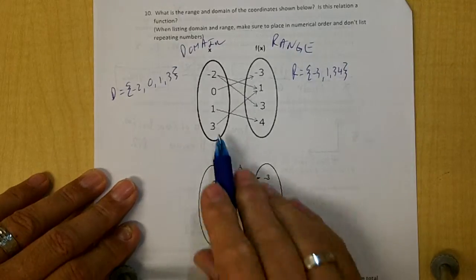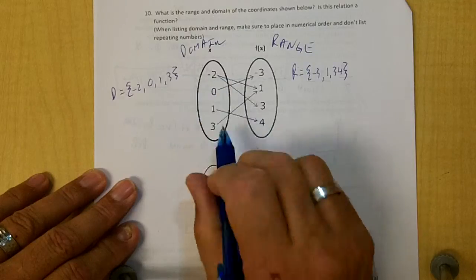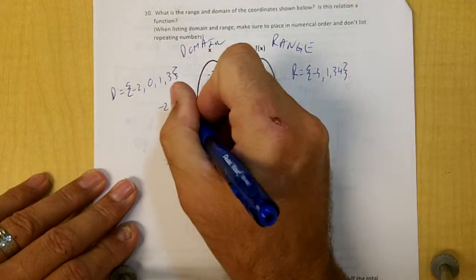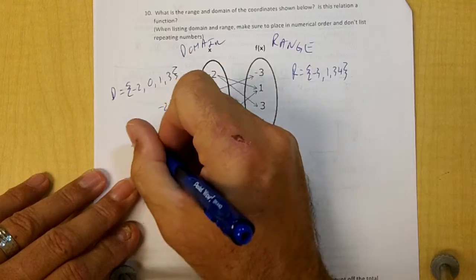And if you look at this function, the negative 2 goes to the 3 and the negative 2 goes to the 1. The negative 2 repeats. It's paired to the 1 and it's paired to the 3. So it's not a function.